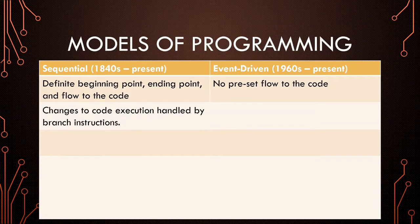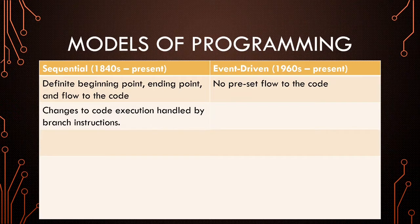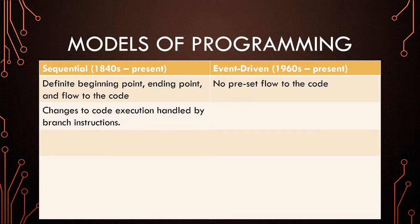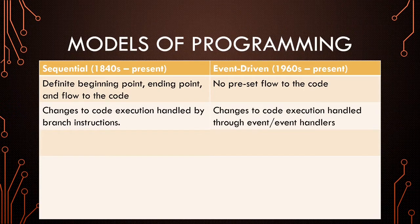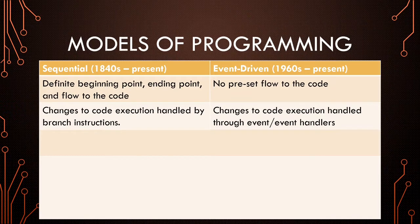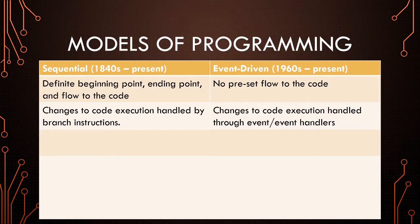In sequential programming, changes to the code are handled by instructions within the code called branch instructions. But if we want to change the code execution in event-driven programming, we just click other buttons or drag other things. So all of the changes to the code execution is through the events and the event handlers.